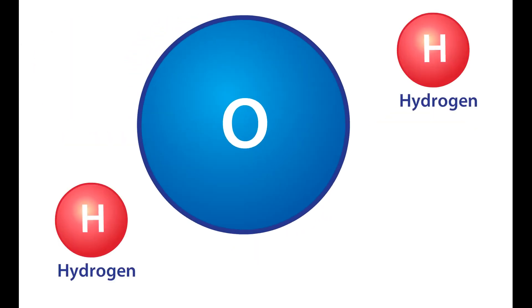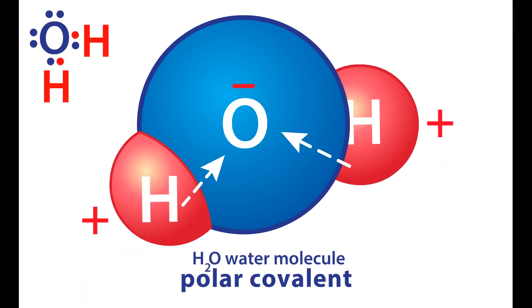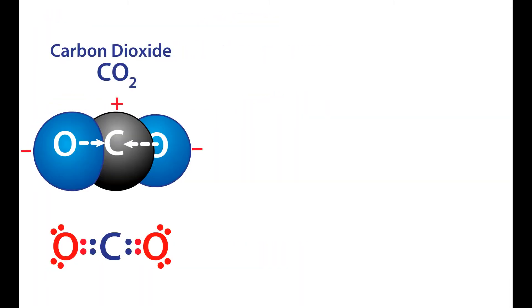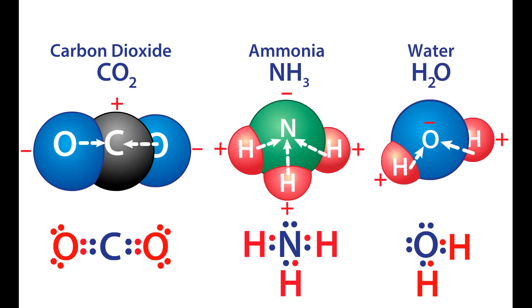Polar bonding results when two different nonmetals unequally share electrons between them. Compounds such as carbon dioxide, ammonia, and water have polar covalent bonds.